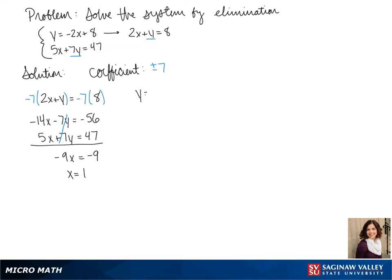Next, we take our 1 and plug it into one of our equations. I'm picking the top one, since it's already solved for y. So y equals negative 2 times 1 plus 8, which gives us y equals 6.